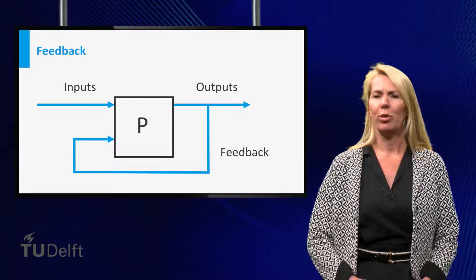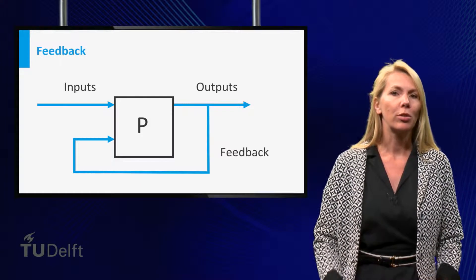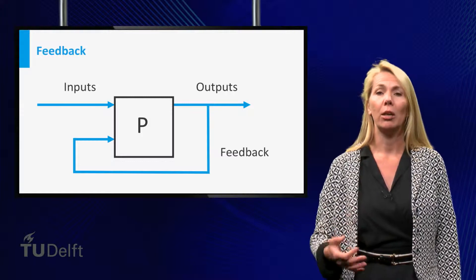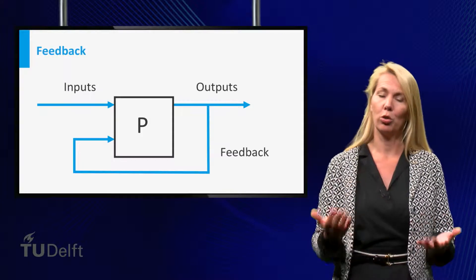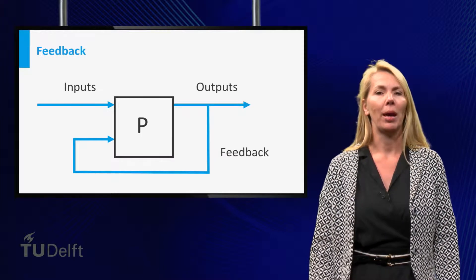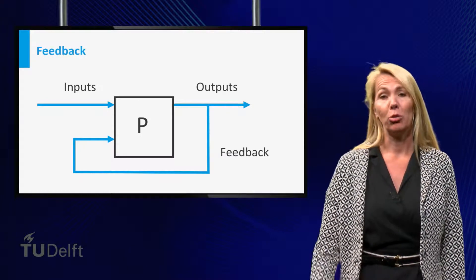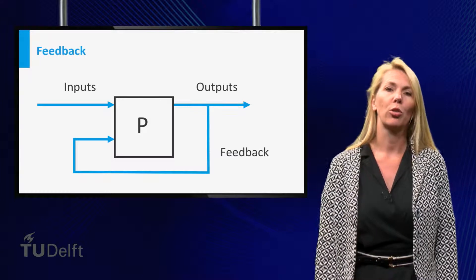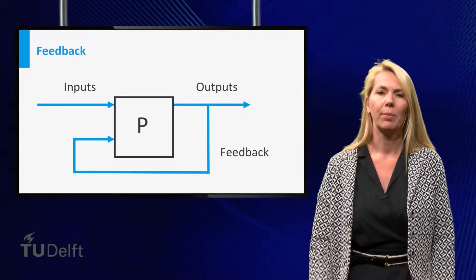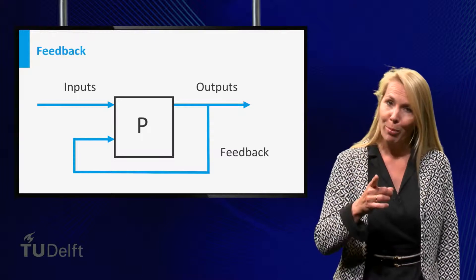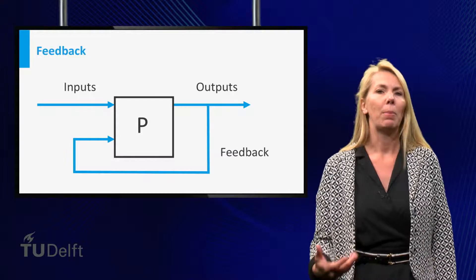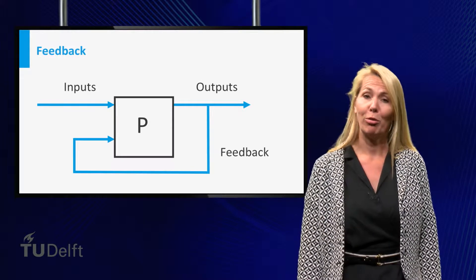In the engineering world, feedback occurs when outputs of a system are fed back as inputs as part of a chain of cause and effect that forms a circuit or loop. But in this video we mean by feedback: information about reactions to your performance of a task, which is used as a basis for improvement. So to improve your mathematics skills, or to improve this course, feedback can be an important source of information.